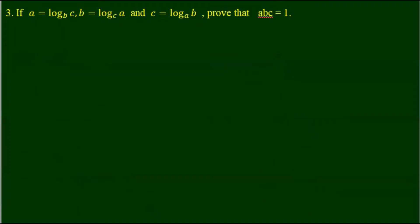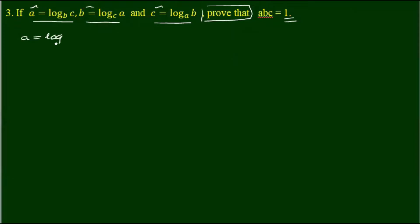We set up the identity: log a base b, log c base b, log a base c, equal to log b base c. The right-hand side is equal to a, b, c.